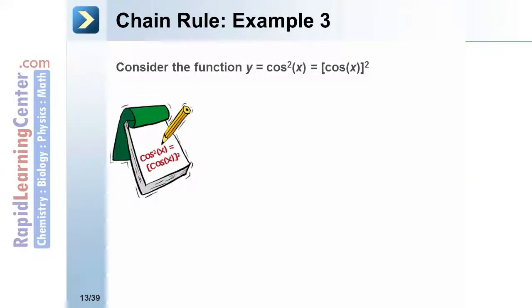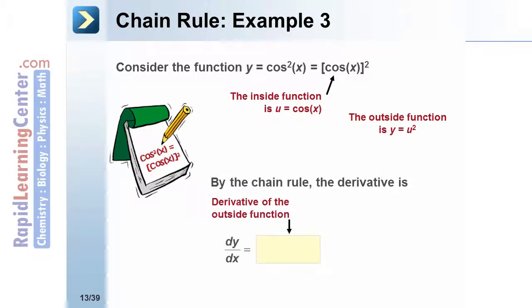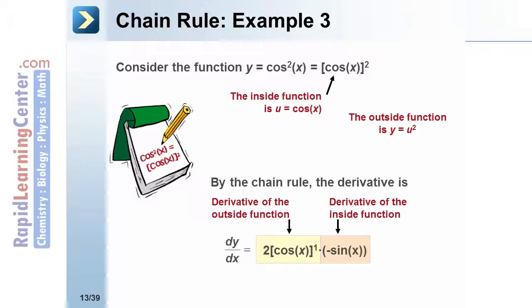Let's look at a third example. Consider the function y equals cosine squared of x. We rewrite this as the quantity cosine of x, squared. The inside function is u equals the cosine of x, and the outside function is y equals u squared. By the chain rule, dy/dx equals the derivative of the outside function times the derivative of the inside function. The derivative of u squared gives 2 times cosine of x, while the derivative of cosine of x is negative sine of x. Simplifying gives us negative 2 cosine of x times sine of x.